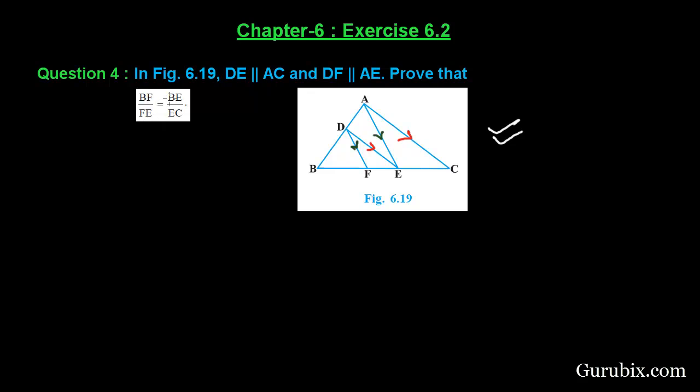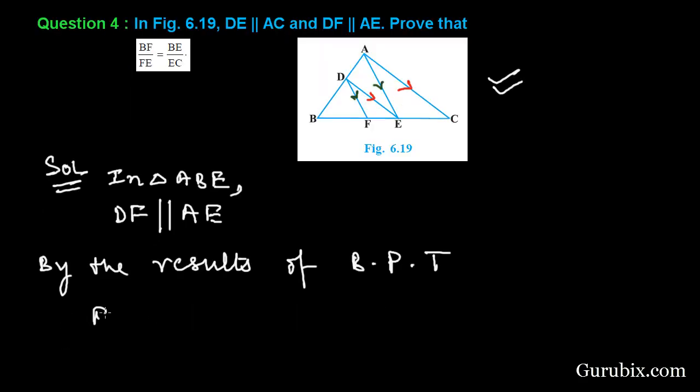We shall start with triangle ABE. We are given that DF is parallel to AE. Therefore, by the results of BPT (Basic Proportionality Theorem), BF over FE equals BD over DA. This is our equation number 1.